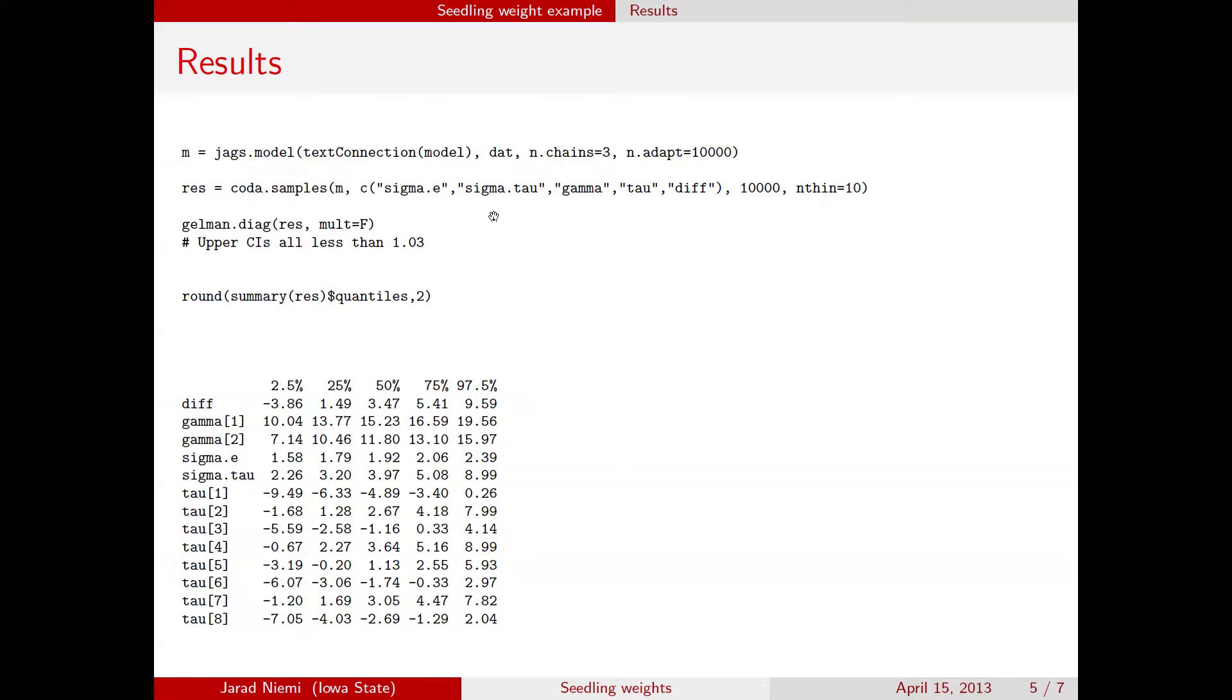We checked our Gelman-Rubin potential scale reduction factor, and find that the upper confidence limits for all of these are less than 1.03, so we feel fairly confident that there's no lack of convergence that is apparent, and that we have enough inferential iterations to perform a meaningful Bayesian inference. That is, our Monte Carlo variability is not very big.